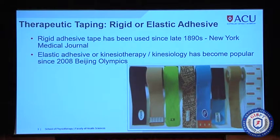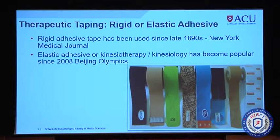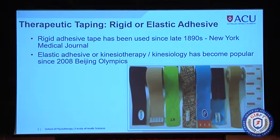In terms of taping, we're talking mainly about therapeutic taping. Back in the late 1800s, rigid adhesive tape began to be used mainly for ankle injuries and was first published in the New York Medical Journal in 1895. Since the 2008 Beijing Olympics, elastic adhesive or kinesiology taping has become popular and has exploded into the market. There are more than four or five hundred different types — some two-way stretch, some four-way stretch, different thicknesses, and some even have perforations for dry needling. It's important to be aware of what materials are accessible in your clinic when considering the evidence for taping.